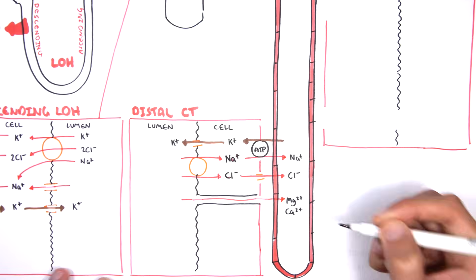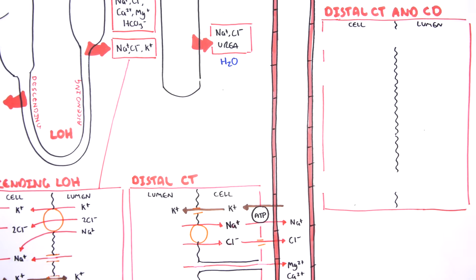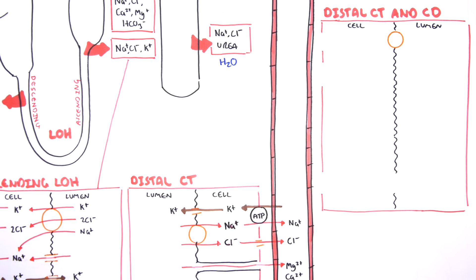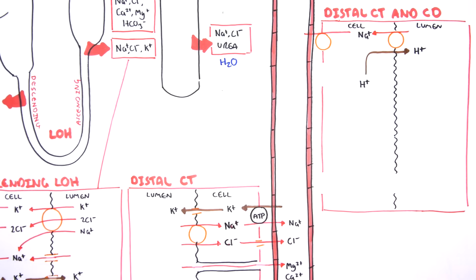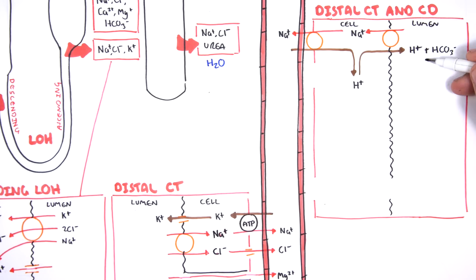Magnesium and calcium reabsorption is thought to occur via paracellular routes — meaning in between the cells, through the tight junctions — and is thought to occur via diffusion. Towards the collecting duct, important processes take place; it is here where the last bit of reabsorption and secretion occurs before the final urine product is produced. From the lumen, sodium is reabsorbed in exchange for hydrogen ions, and the reabsorption of sodium into circulation relies on this hydrogen exchange.